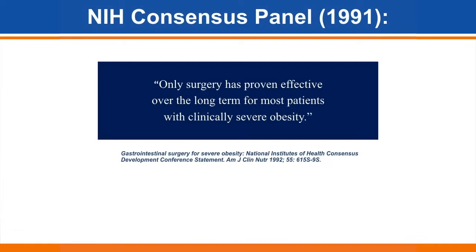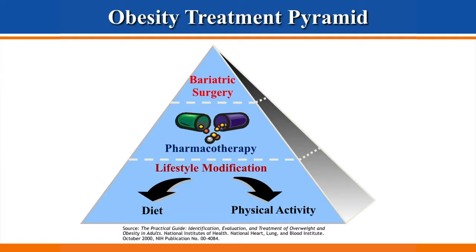The National Institutes of Health in a 1991 statement said that bariatric surgery is effective for the long term for most patients with severe obesity. This triad pyramid of obesity management shows that diet and exercise remains the base of any weight loss, whether we add medication or surgery. Without diet and exercise, none of the modalities work — however, surgery and medication help tremendously, but diet and exercise is still a very important part.